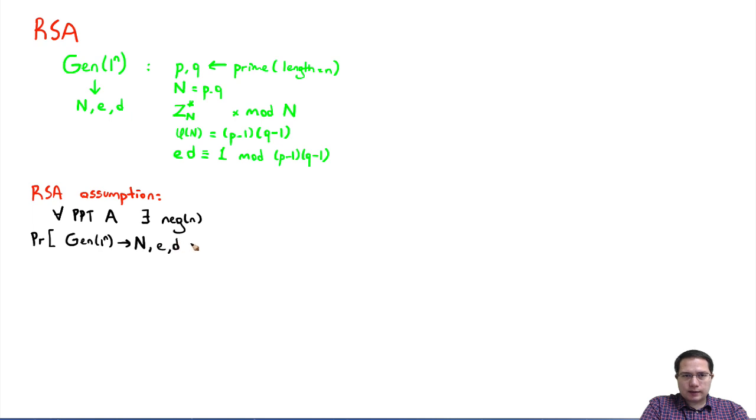We pick a random value x from Z_n*, and then what we do is give the adversary the security parameter n and e, but not d. Instead, we give the adversary x to the power e. We compute this, give it to the adversary, and expect the adversary to return back x, essentially the e-th root of the element in the group that we gave to the adversary.